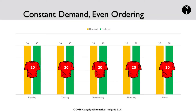Imagine a predictable world where your customers order a total of 20 shirts from you each day. All products arrive from your supplier in perfect condition, and you never have a delivery delay. Even in this predictable world, it's not that simple to meet your constant customer demand. Let's see why.